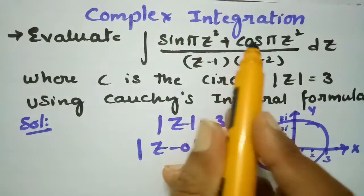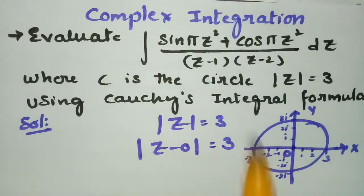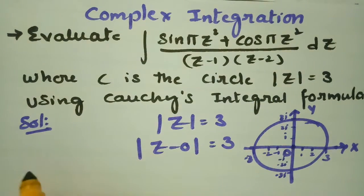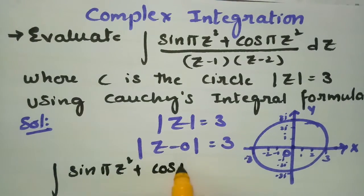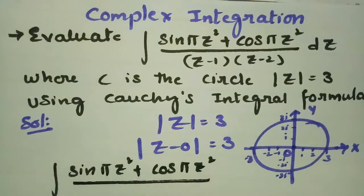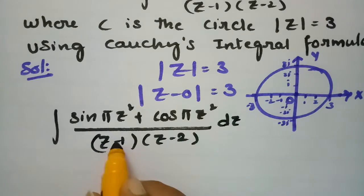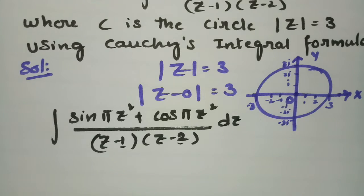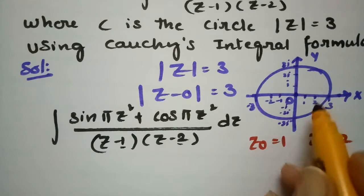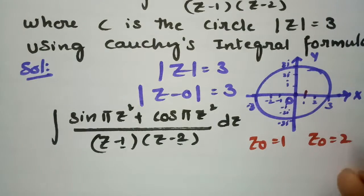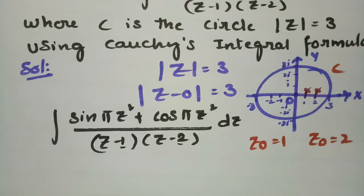Now we have to evaluate this integral, so first we need to find the singular points. The singular points are where the denominator is zero: z − 1 = 0 and z − 2 = 0, giving z₀ = 1 and z₀ = 2. Both points lie inside the contour C.